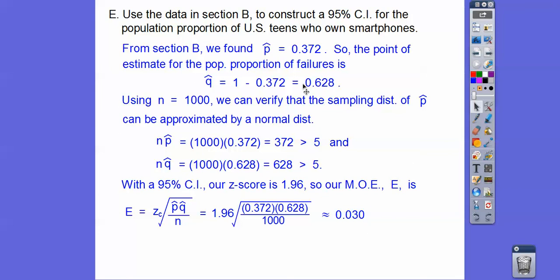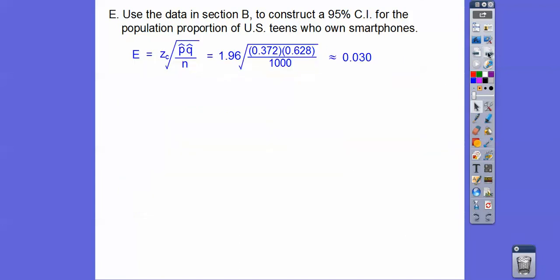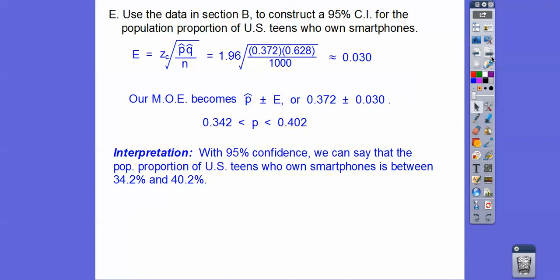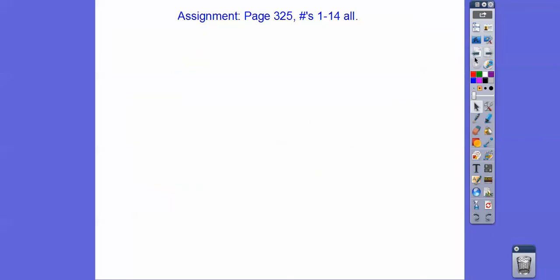Since P-hat has three decimal places, E is rounded to three decimals: 0.030. So the confidence interval is P-hat plus or minus 0.030. With 95% confidence, we can say the true population proportion of U.S. teens who own smartphones is somewhere between 34.2% and 40.2%. If you're in my class, you'd be assigned to that. Take care.